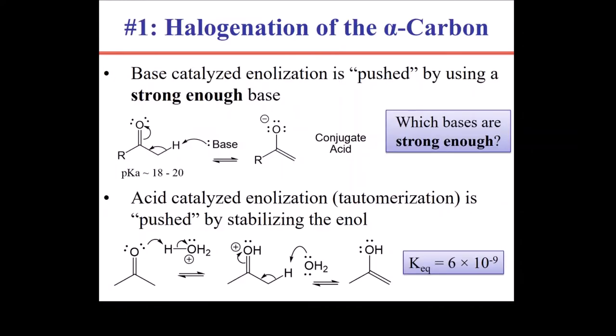Okay, on to new material. Today's lecture will focus on five different topics. The first of these topics is halogenation of the alpha carbon. To set the groundwork for halogenating the alpha carbon, we need to consider the two conditions where we can form an enolate or an enol. Those are either base-catalyzed conditions or acid-catalyzed conditions. And the base-catalyzed conditions is what we've spent most of our time thinking about up until now.